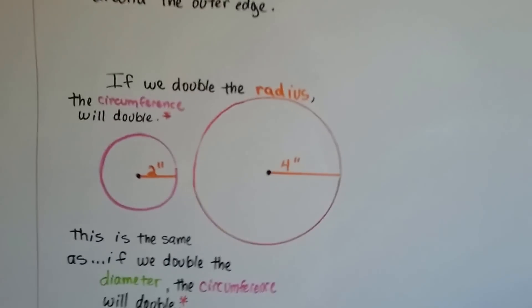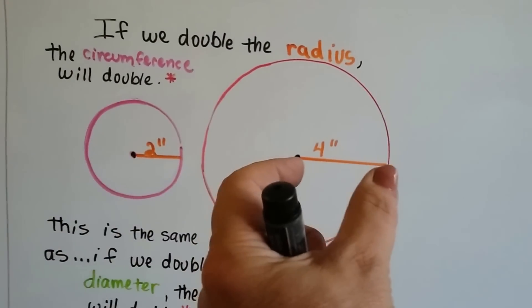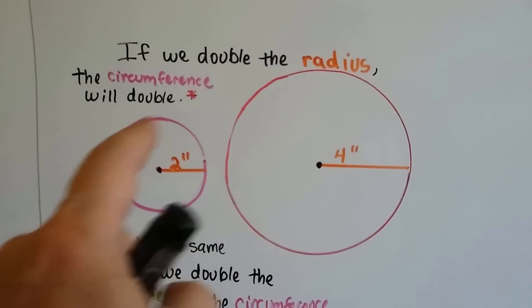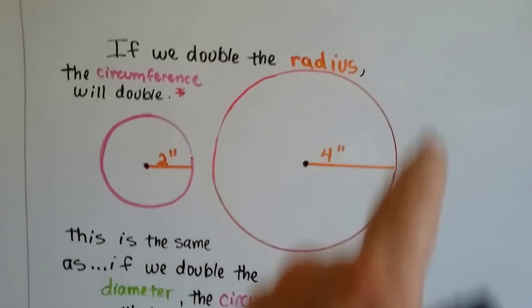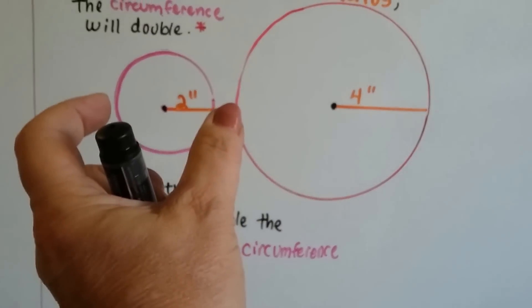If we double the radius, the circumference will double. If we have a two-inch radius, and we double it to a four-inch one, the circumference will just become double its measure. It's the same thing as if we double the diameter, because the diameter goes all the way across.